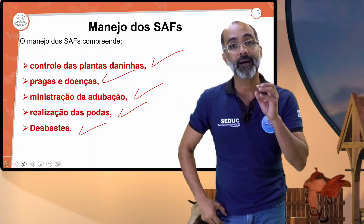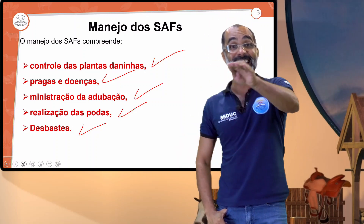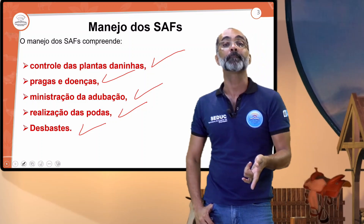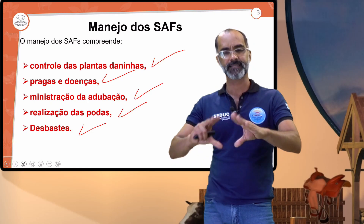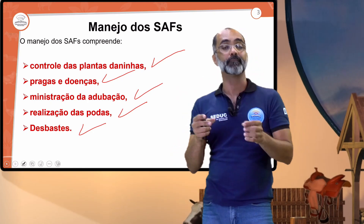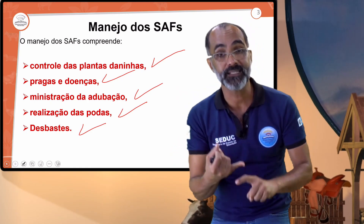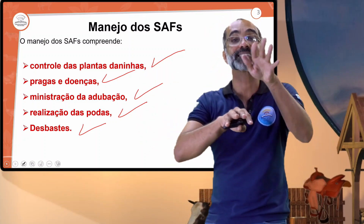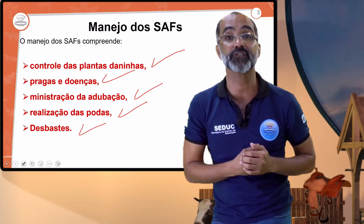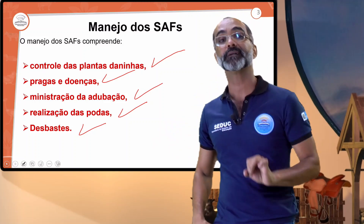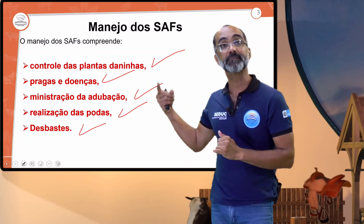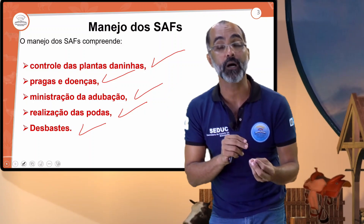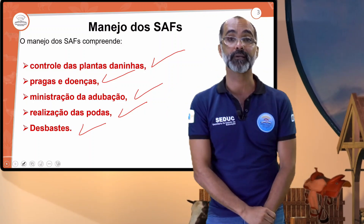Por isso vocês veem hortas teladas: não é só para evitar ataque de galinhas, pássaros e animais, mas também para evitar insetos e a dispersão de gotas do sistema de irrigação ou chuva durante o desenvolvimento do vegetal quando ele ainda está em plântula. Todos esses manejos estão sempre relacionados ao processo fisiológico da planta no seu desenvolvimento.